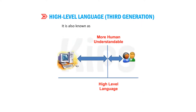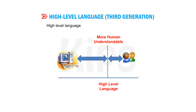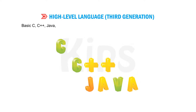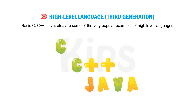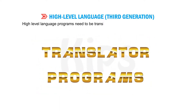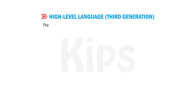High-level language (HLL) is quite similar to the English language. BASIC, C, C++, Java, etc. are some very popular examples of high-level languages. High-level language programs need to be translated into machine language by using translator programs. There are two types of translator programs.